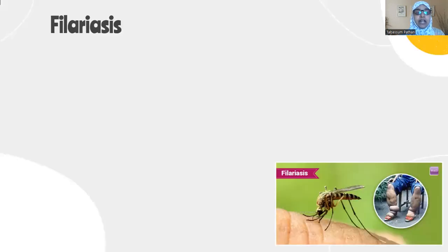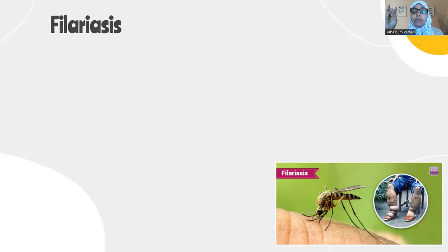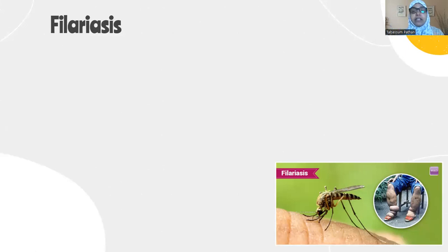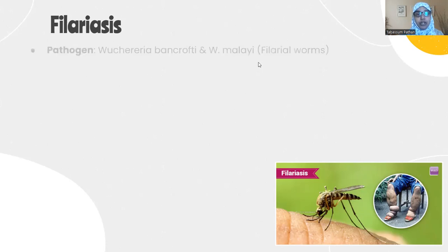Moving to the next disease: filariasis. Filariasis is also a worm disease caused by thread-like worms or nematodes. Like malaria — caused by a protist parasite — and ascariasis — caused by a roundworm nematode — filariasis is also a parasitic worm disease. These nematodes transfer from one person to another via mosquito bites.